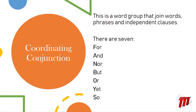I'll say that again: for, and, nor, but, or, yet, so. And if you really want something to help you remember these coordinating conjunctions, think about FANBOYS — For, And, Nor, But, Or, Yet, So. These are the coordinating conjunctions that you will use to fix run-on sentences and make them compound sentences.